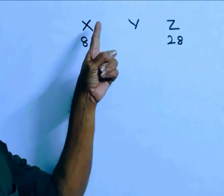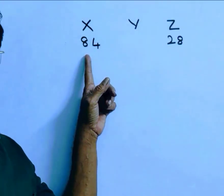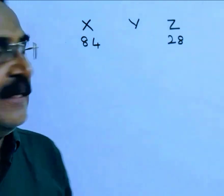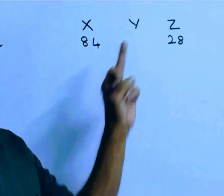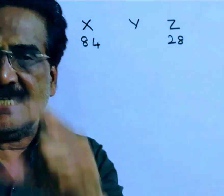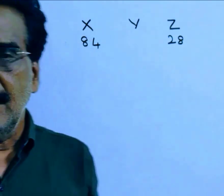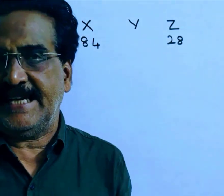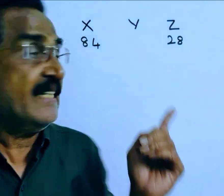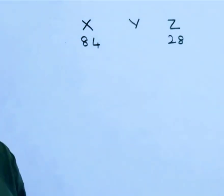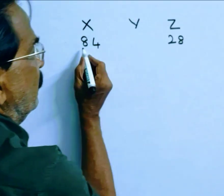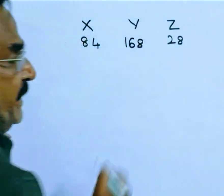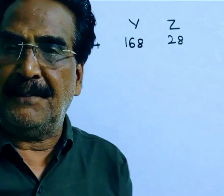X can complete work in 84 days and Z can do the same work in 28 days. Y is 50% less efficient than X. Since Y is 50% less efficient than X, Y takes twice the number of days of X. That is twice of 84, 168. So Y takes 168 days to complete the work.